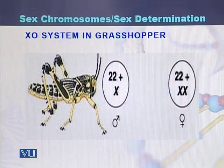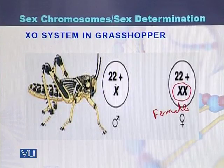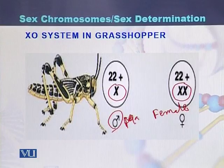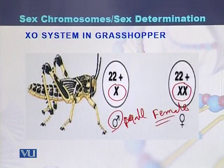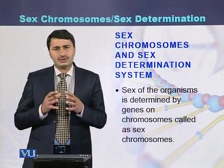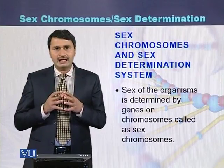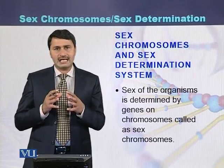The sex determination system in the grasshopper. If there are two X chromosomes along with the autosomes, the grasshopper will be female. If there is a single X chromosome in addition to the autosomes, a male will be produced. We can conclude that sex chromosomes carry the genes responsible for the determination of sex. In animals there are autosomes as well as sex chromosomes.